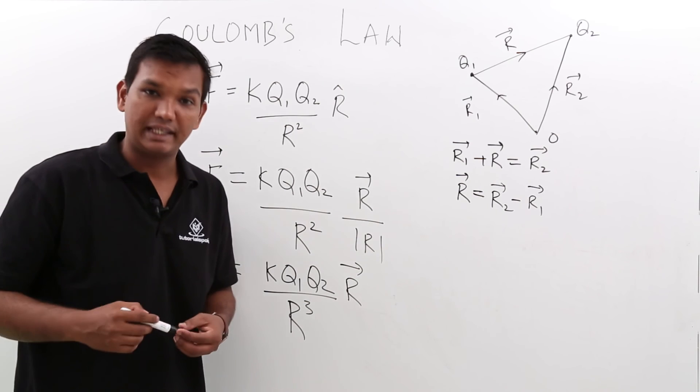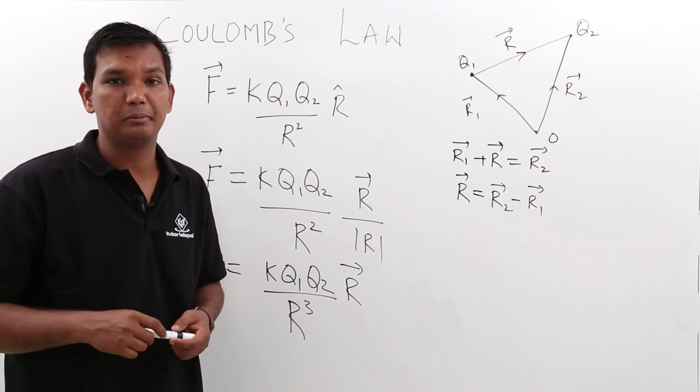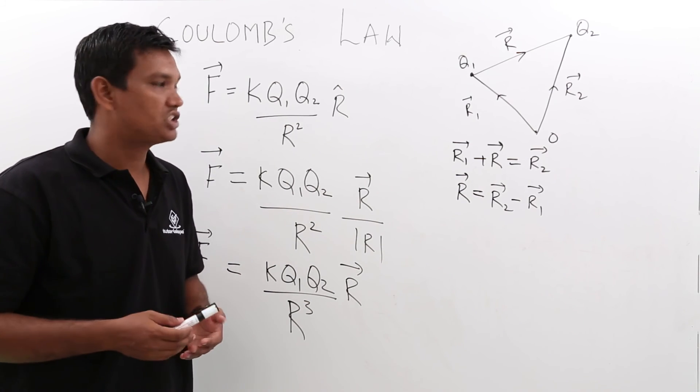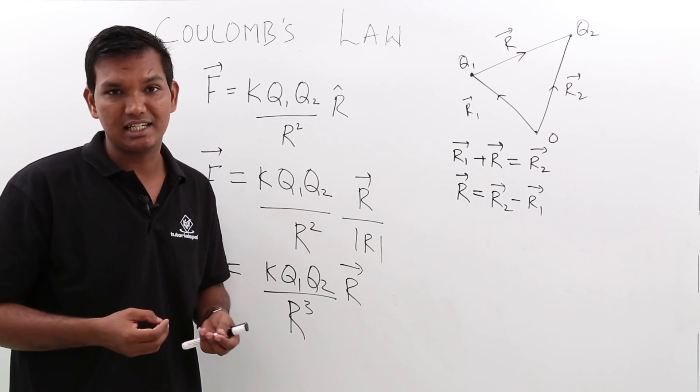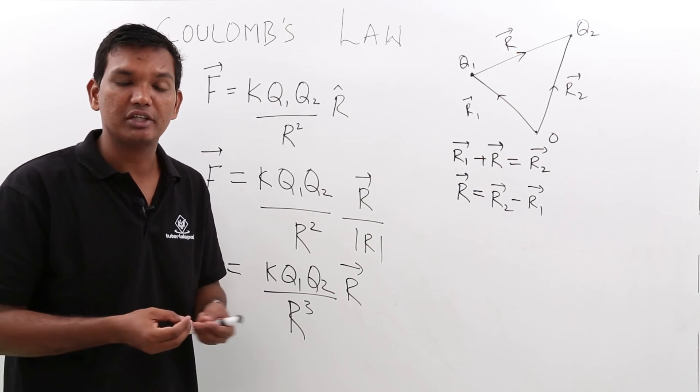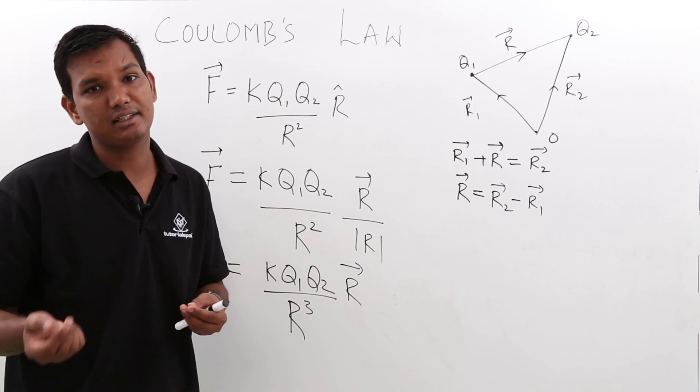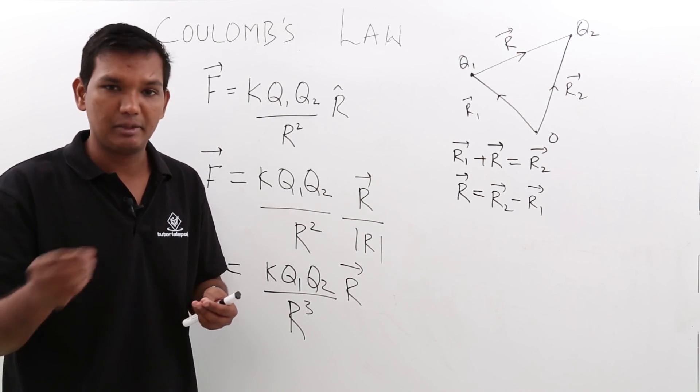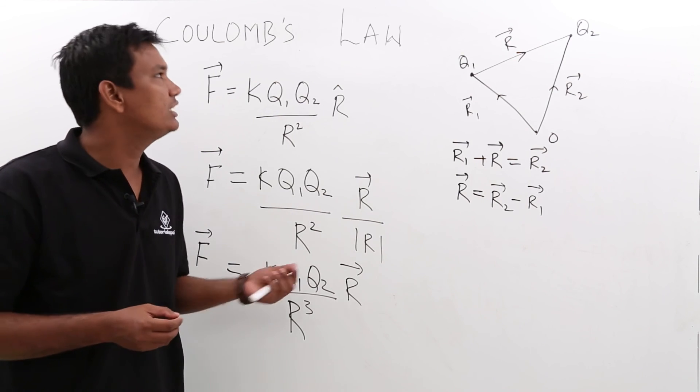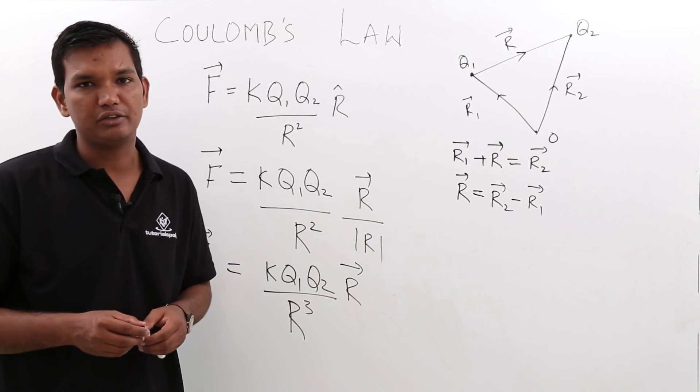Now this force can be attractive or can be repulsive. It depends on the charges. If both are like charges, like positive positive, it will be repulsive. If one is like, another is unlike, like plus and minus, then it will be attractive. We will be seeing the numerical on Coulomb's law in the next videos.